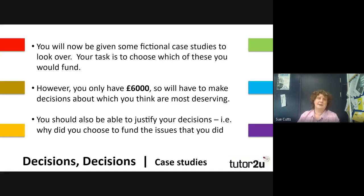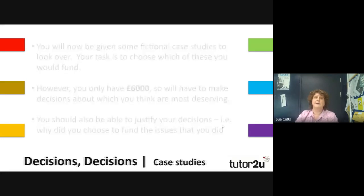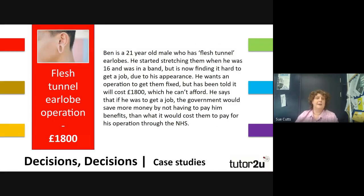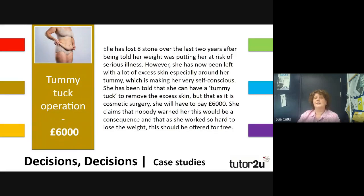This is an activity based around six patients. You have £6,000 to spend; each patient has a particular issue or requires treatment and you have to decide which patients you would treat and how you would spend that £6,000. You can pause the video at any point and decide who gets the funding. The first person who requires funding is Ben, who needs an ELO operation at a cost of £1,800. The next person to consider is Al, who has lost eight stone over the last couple of years and requires a tummy tuck operation at a cost of £6,000.